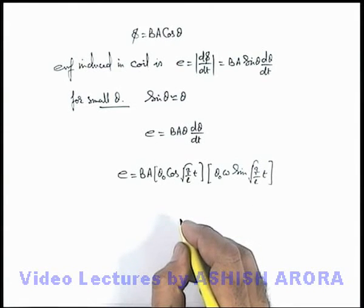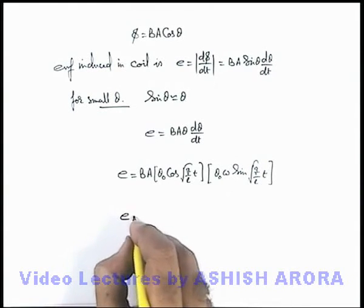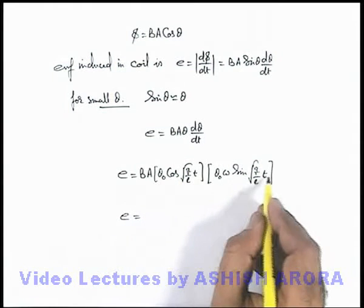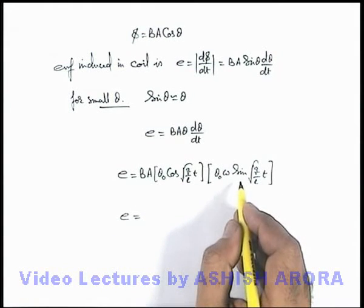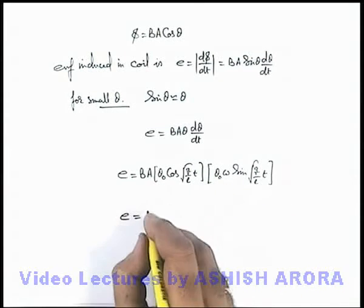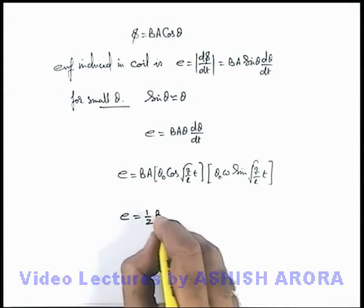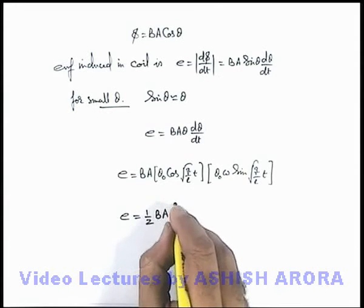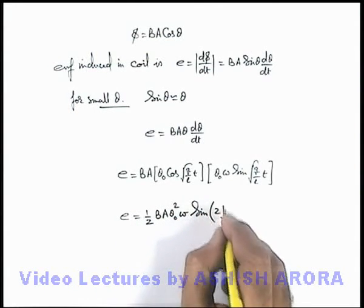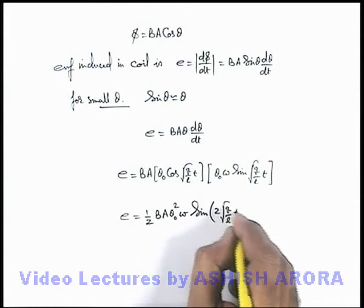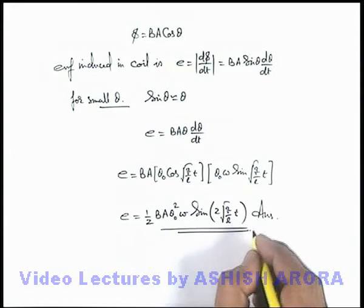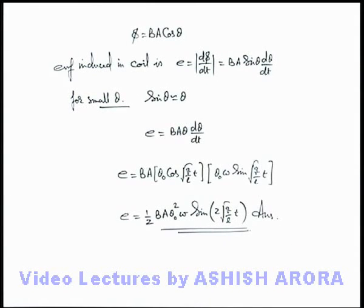We can further simplify this result. We see the product cos(√(g/l)·t)·sin(√(g/l)·t) can be written as ½·sin(2√(g/l)·t), using the double angle identity. So the final EMF is ½·B·A·θ₀²·ω·sin(2√(g/l)·t). This is the answer to the problem — the induced EMF in the coil as a function of time.